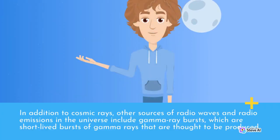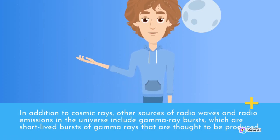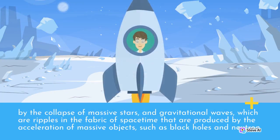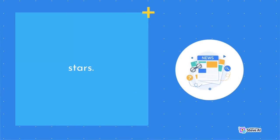In addition to cosmic rays, other sources of radio waves and radio emissions in the universe include gamma-ray bursts, which are short-lived bursts of gamma rays that are thought to be produced by the collapse of massive stars, and gravitational waves, which are ripples in the fabric of spacetime that are produced by the acceleration of massive objects such as black holes and neutron stars.